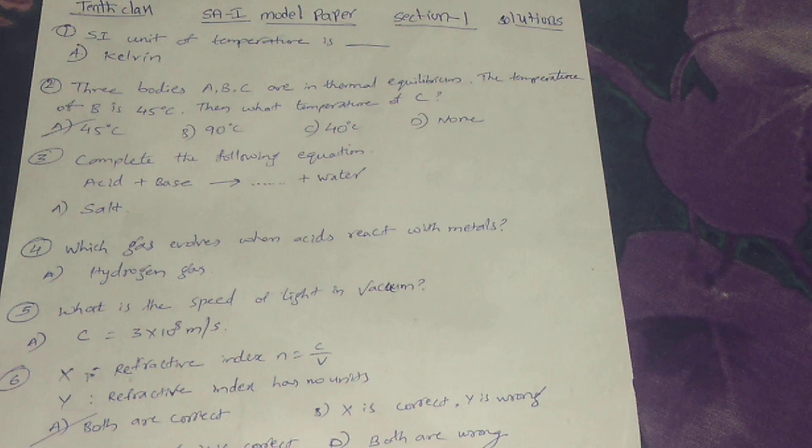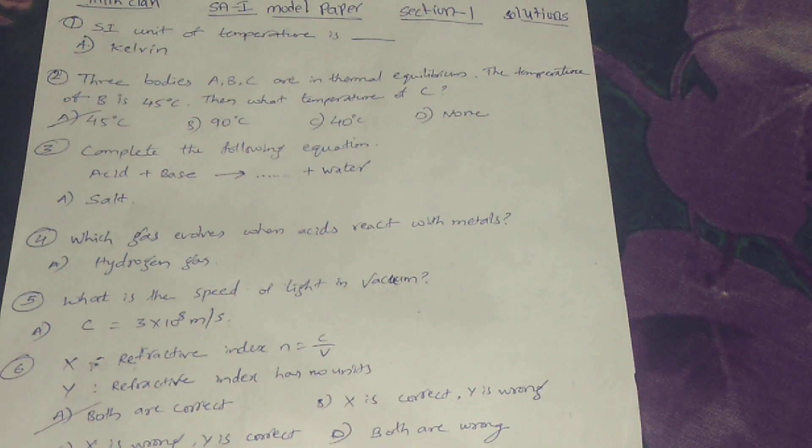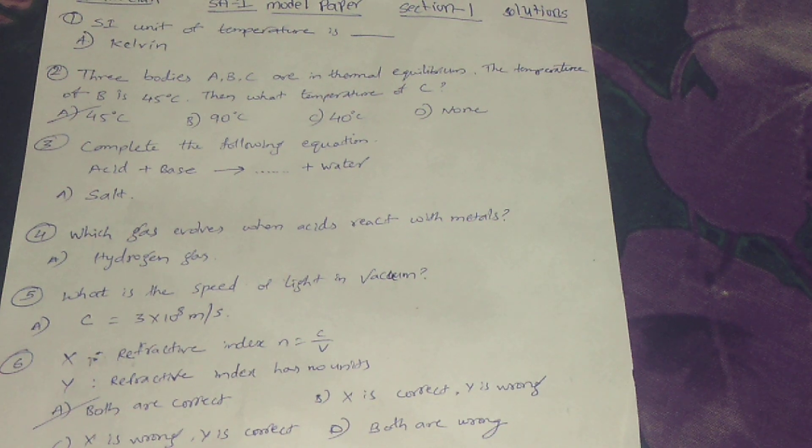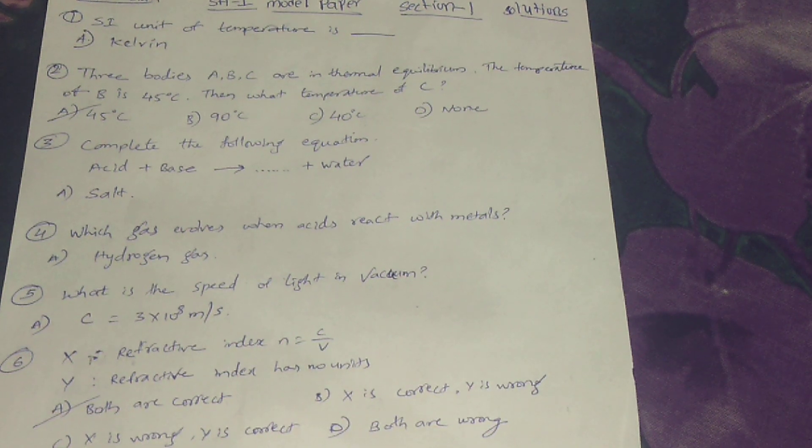Fifth, what is the speed of light in vacuum? Answer: C equals 3 into 10 power 8 meter per second.